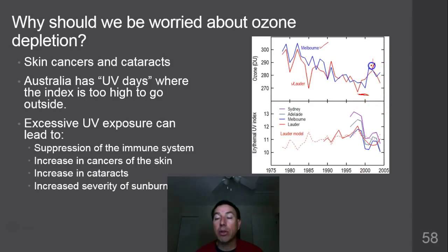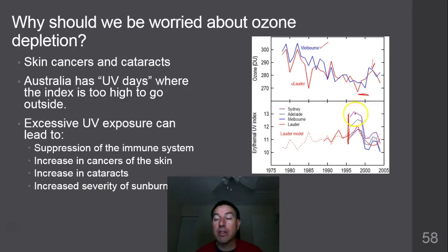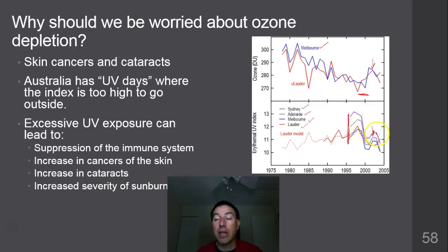After 1999, ozone started to increase — we'll get to why that happened later. If we correlate that to UV exposure, we can see that at the time of lowest ozone, the highest amount of UV radiation in these Australian cities occurred, and then as ozone increased, UV exposure went down. Sydney, the further south city shown by the purple line, had the highest UV because it's closer to the ozone thinning area.